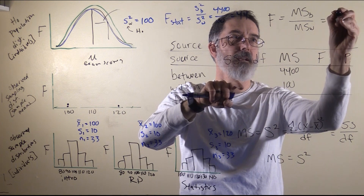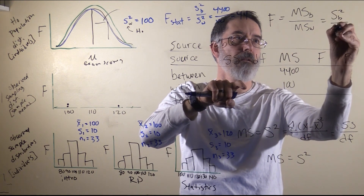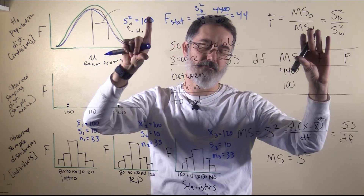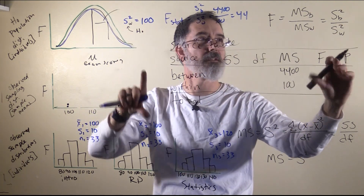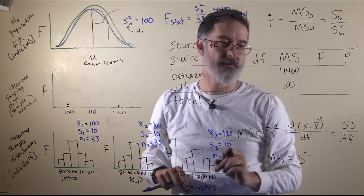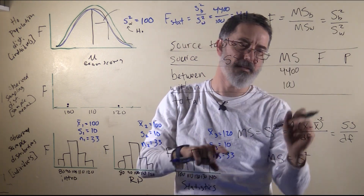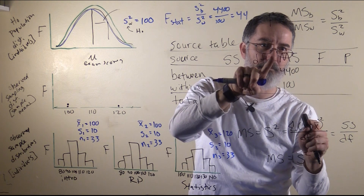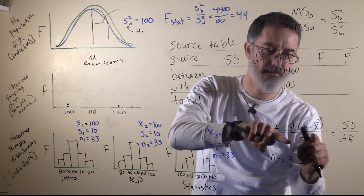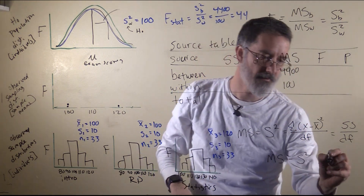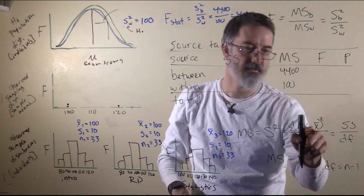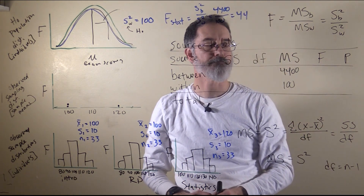This is exactly the same thing, except this is the table that you are going to get from SPSS or whatever program you are using, and it is going to call these mean squares rather than variances. Notice these are mean squares because they are squared deviations, and it is the average of them because you are dividing by the degrees of freedom, which is basically the sample size. That is why it is called the mean square.